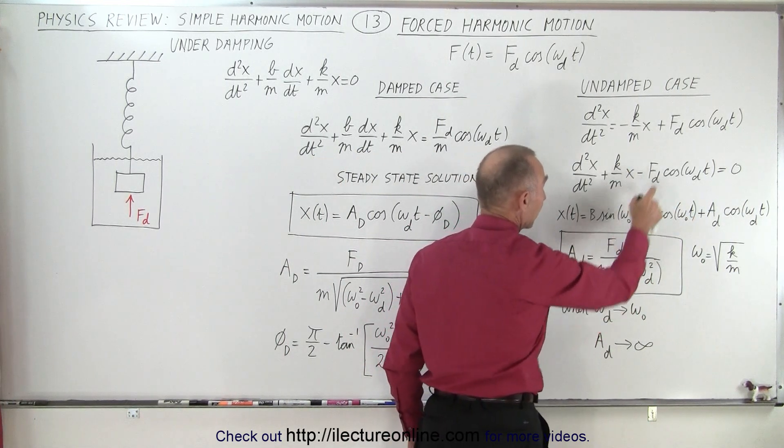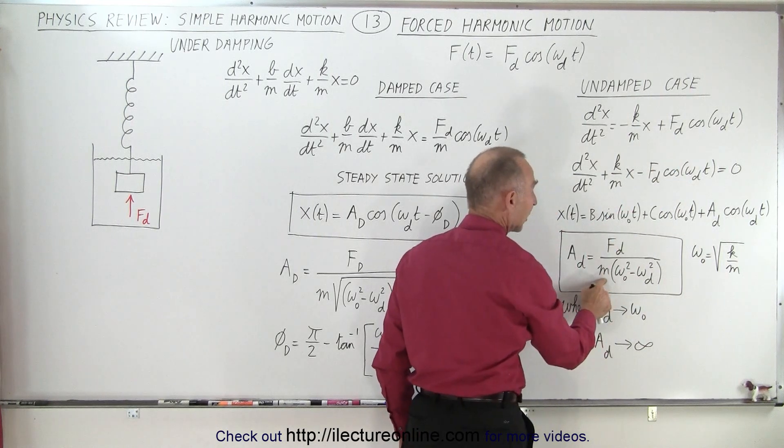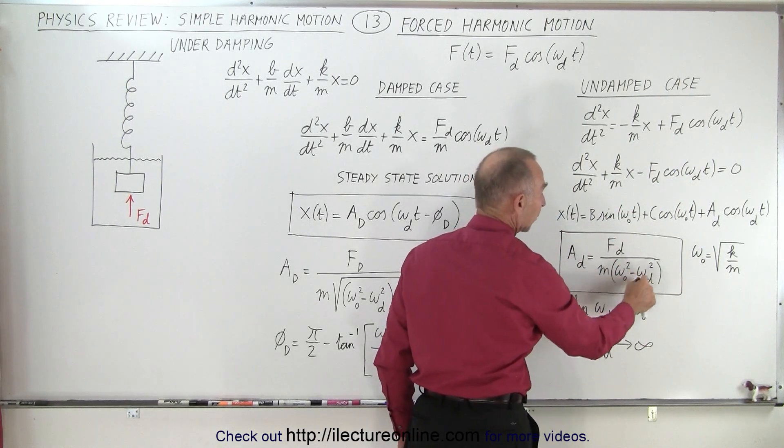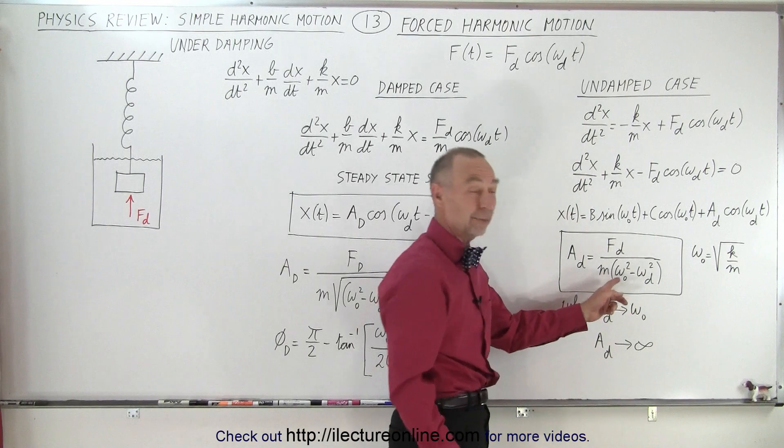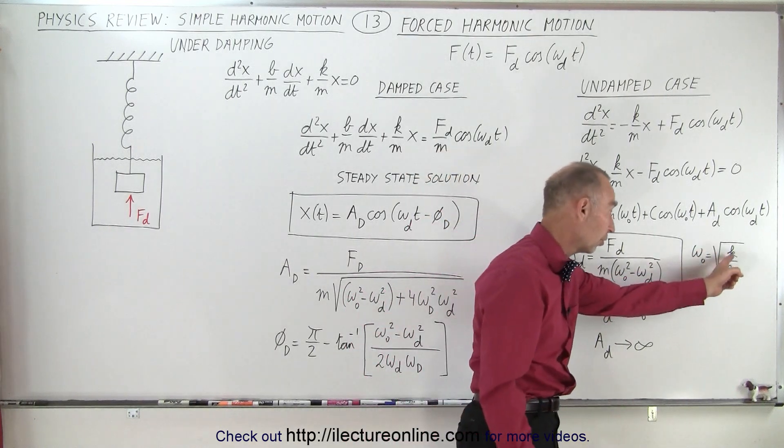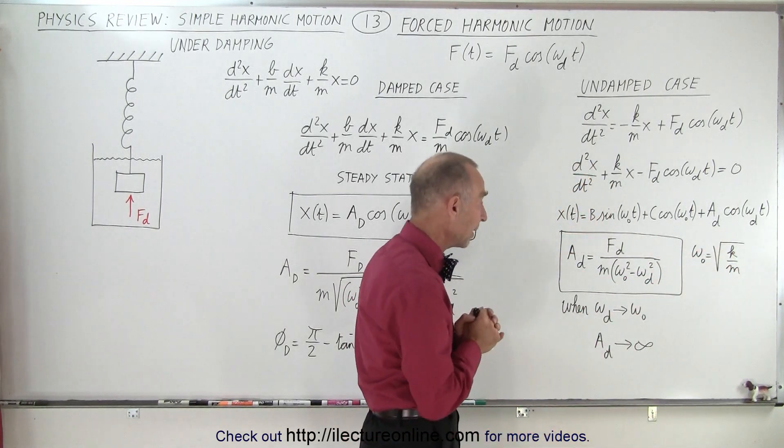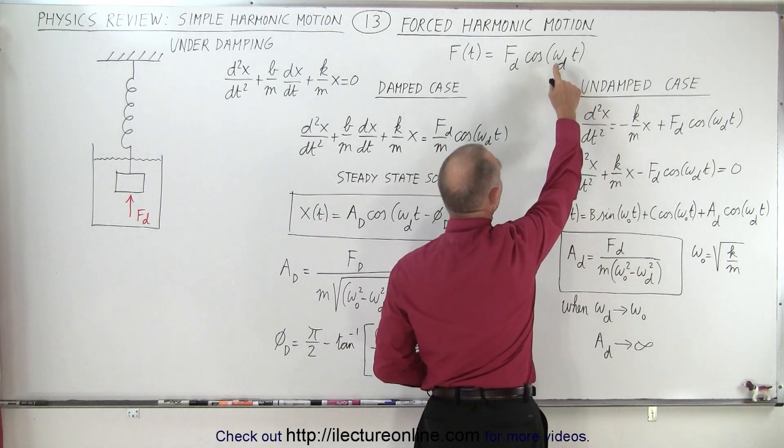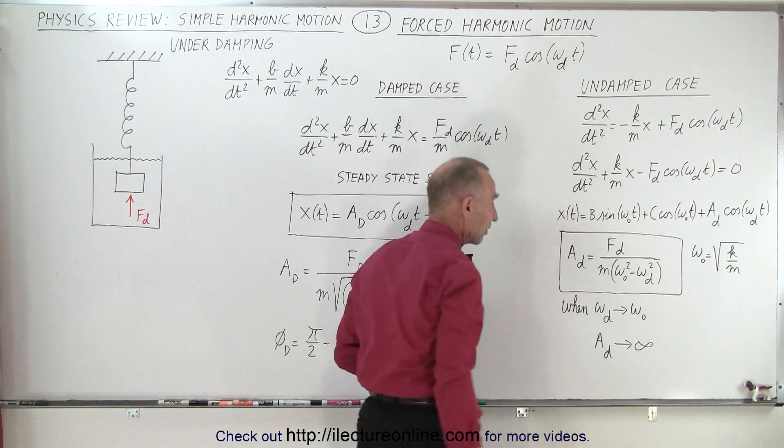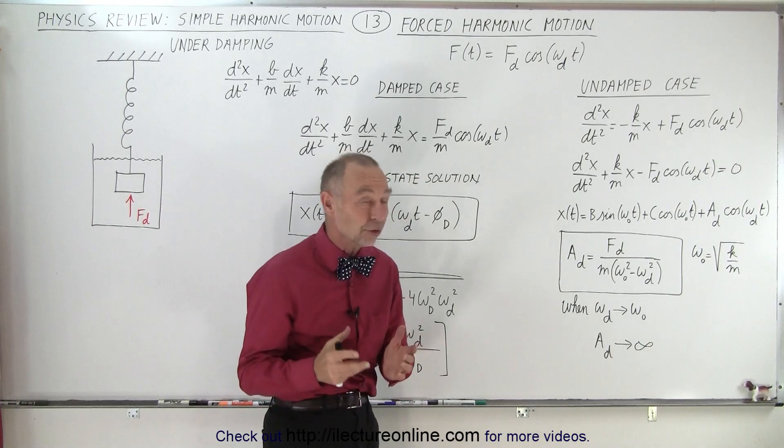And then we can see that the amplitude caused by the driving force affecting the oscillation is equal to the magnitude of the driving force, the maximum magnitude, divided by the mass, divided by omega sub nought squared minus omega sub d squared. Now omega sub nought is the square root of k over m.